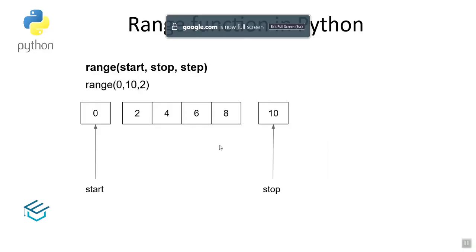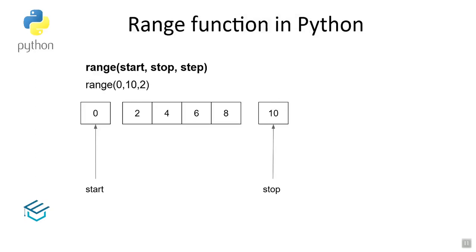Now, the step parameter. So range has start, stop, and step — you can increase by 1, 3, or decrease by minus 1. The increment or decrement point — the step. So the syntax is range(0, 10, 2) — start 0, plus 2 step — 0 2 4 6 8.